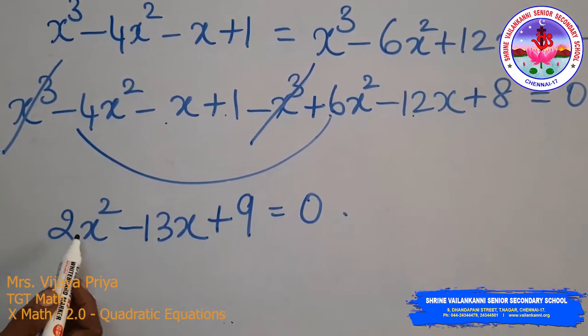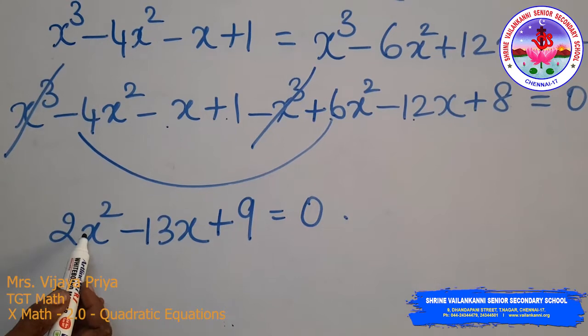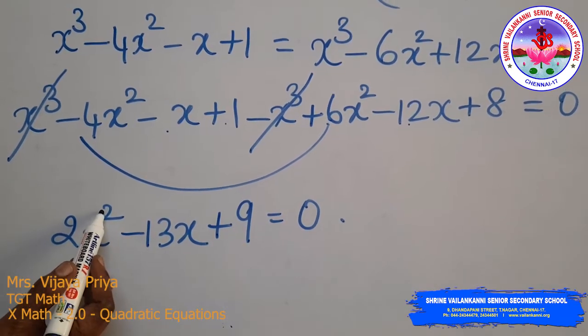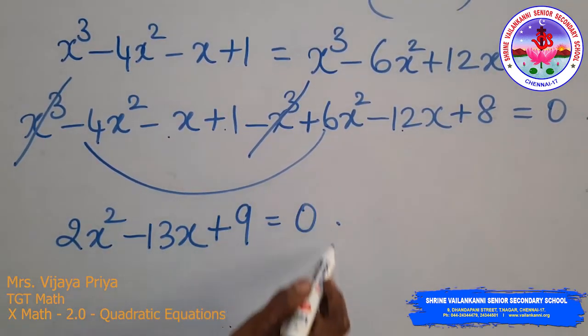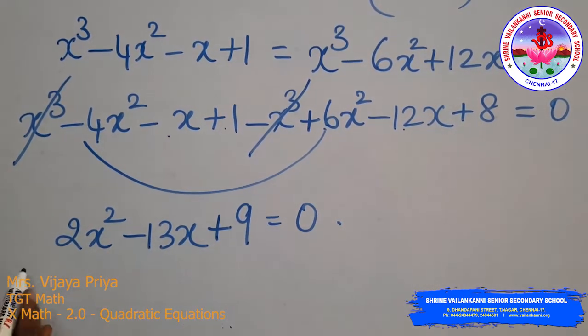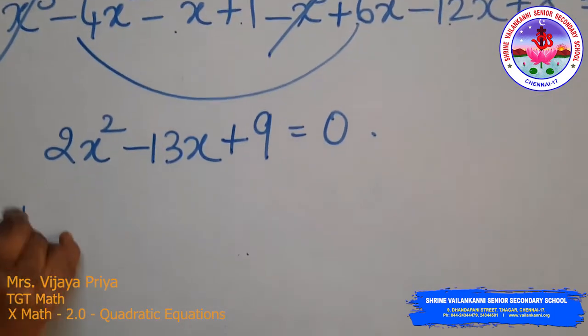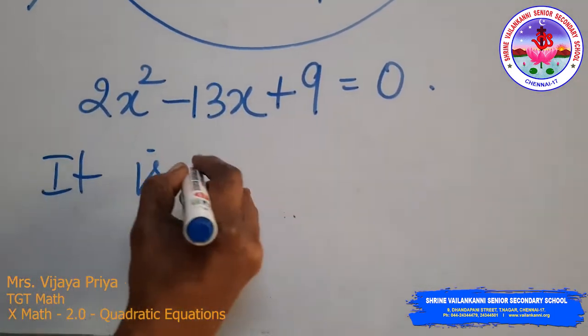Since this equation has the highest power of the variable equal to 2, we call this a quadratic equation. It is in quadratic equation form.